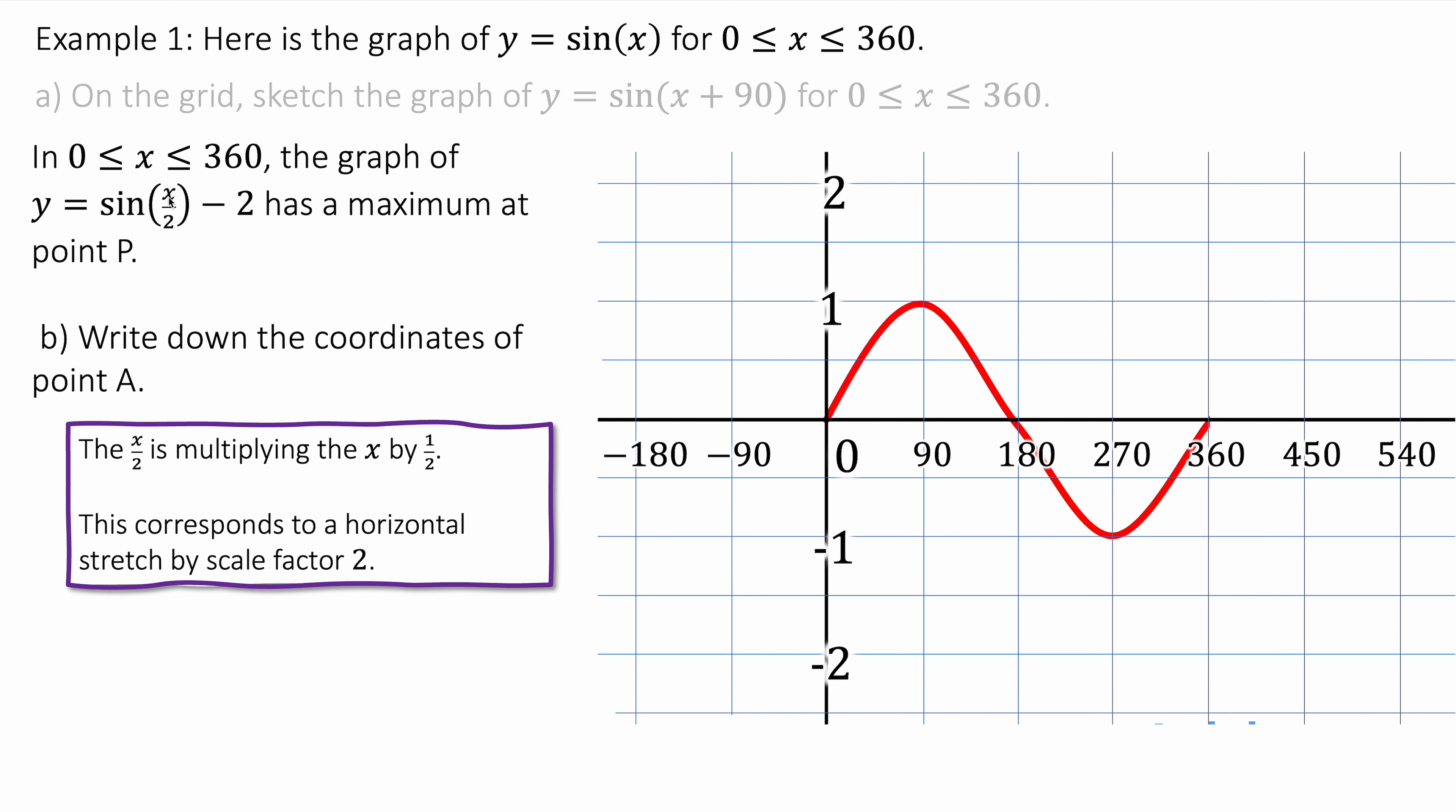So it's sin of a half of x. And so the horizontal stretch will be flipping a half upside down. And if you flip a half you get 2 over 1 or 2. So the horizontal scale factor will be 2. You're going to multiply the period by 2. And so it will look like this where we've stretched it by a scale factor of 2 horizontally.